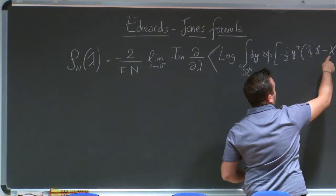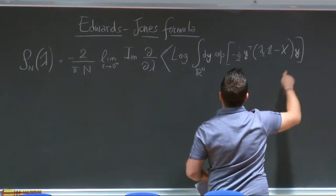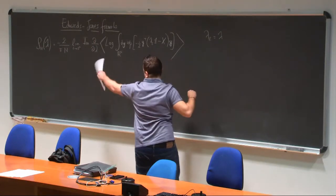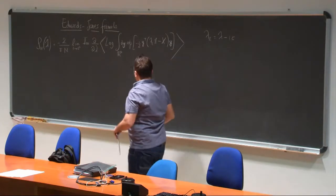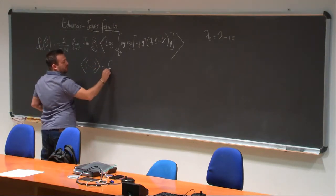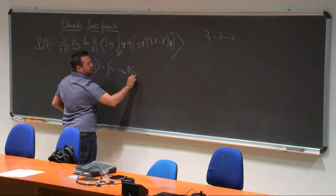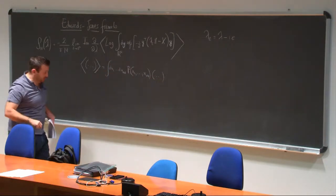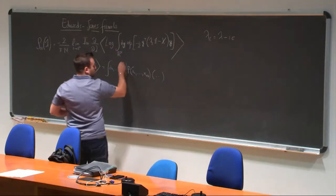We have a random matrix X. Let's assume it is real symmetric. We have a certain vector of dynamical variables Y. Lambda-epsilon is lambda — the location at which we want the spectral density — minus i-epsilon. This symbol here means average over the disorder, meaning we are taking the average over the joint PDF of the entries of our matrix X. This is the only input of the formula.